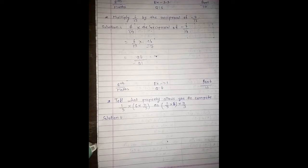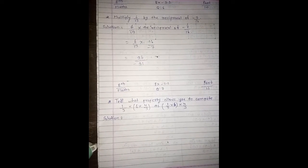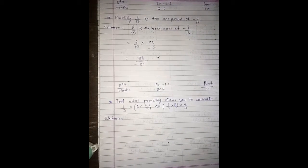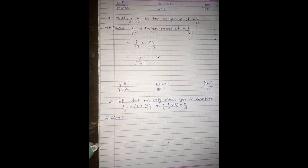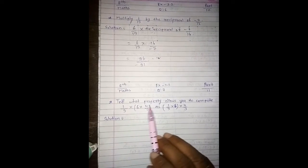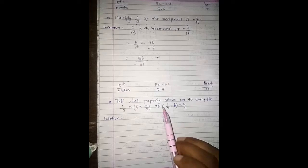Good morning children, this is video part 11 of Class 8th Maths. In this video we are going to solve Exercise 1.1 question number 7. So let's read the question: Tell what property allows you to compute 1/3 multiply 6 multiply 4/3.